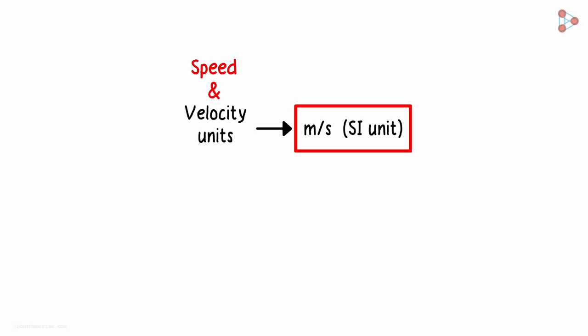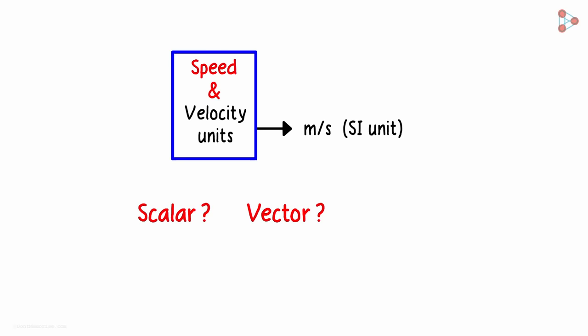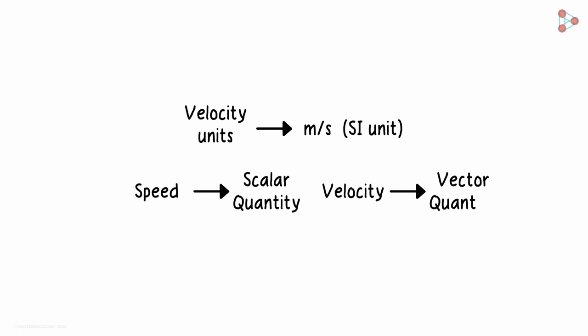But do you remember which one is a scalar quantity and which one is a vector quantity? Yes, speed is a scalar quantity and velocity is a vector quantity as the direction is also specified.